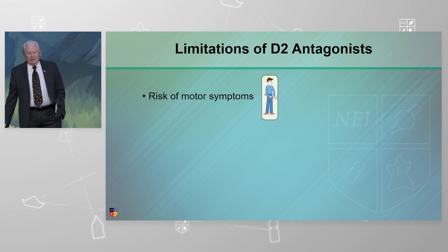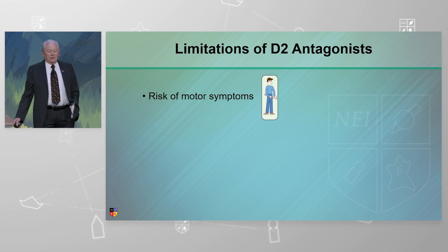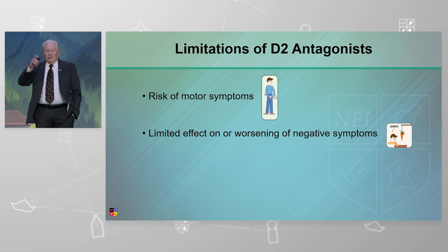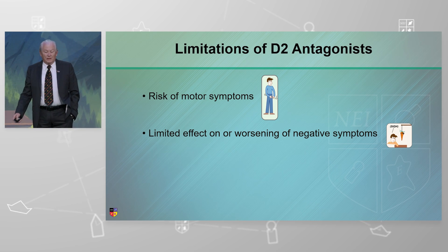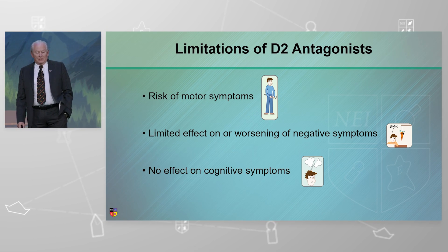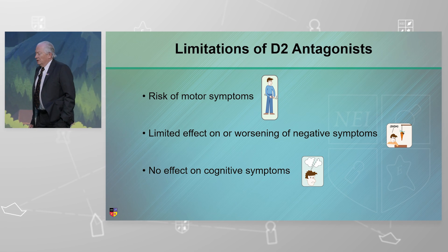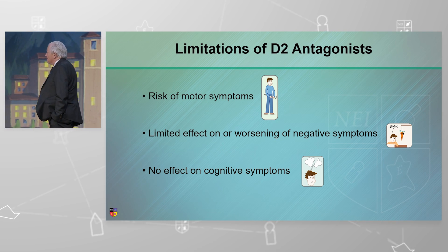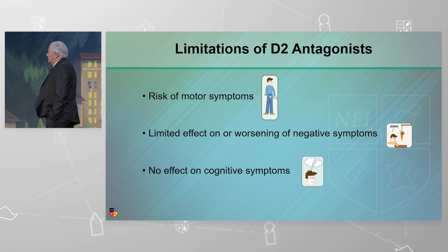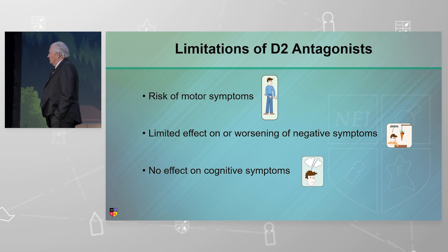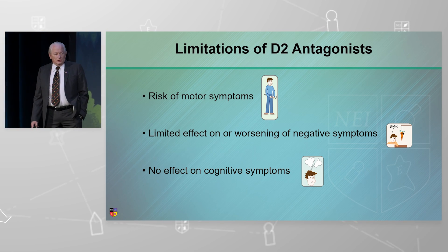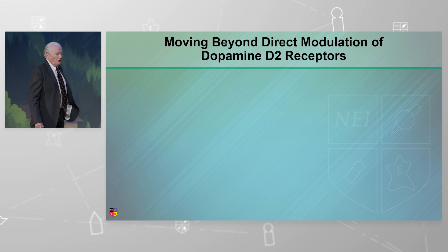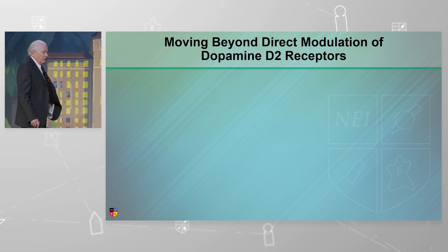We all know the limitations of the D2 antagonists — they cause motor symptoms, they do nothing to improve and may even worsen the negative symptoms and the cognitive symptoms. So we put up with them because they work for positive symptoms and it's the only game in town. The risk-benefit ratio is in favor of use, but there's a tremendous amount of limitations.